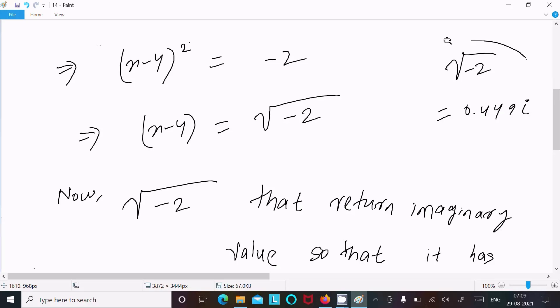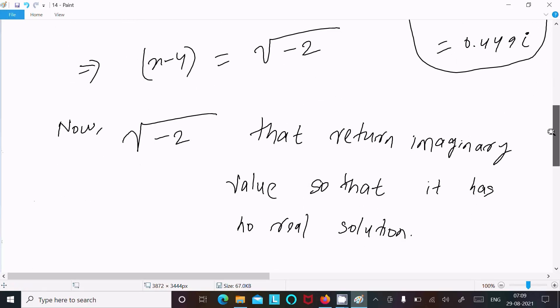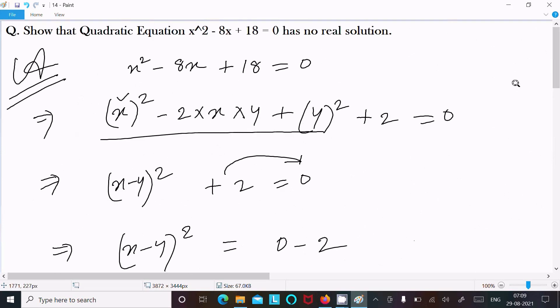i comes, so i is imaginary number, imaginary number cannot be real, so that here quadratic equation has no real solution.